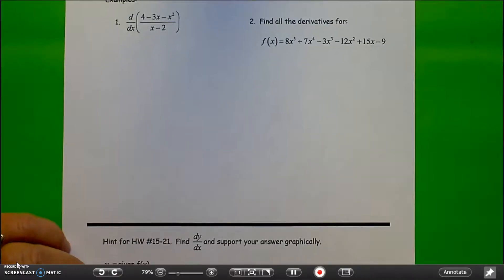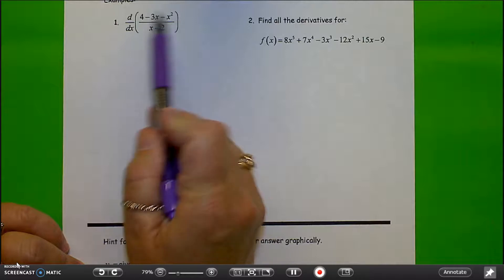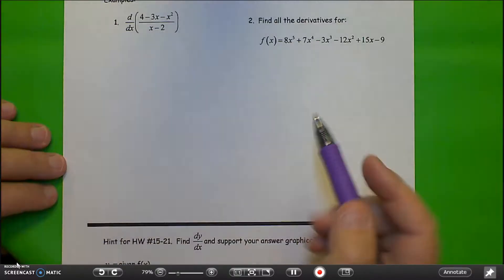We're going to do an example of the quotient rule. So here I have, this is asking me for the derivative of, this looks like a trinomial divided by a binomial. So I'm going to use the quotient rule.